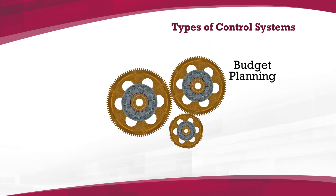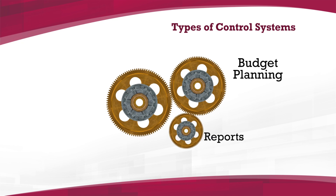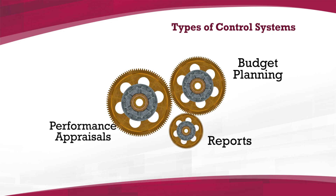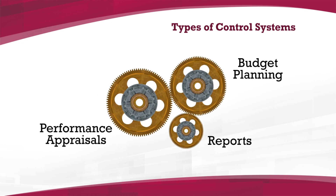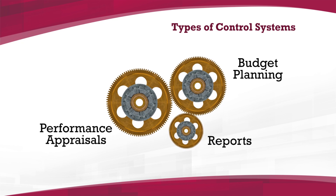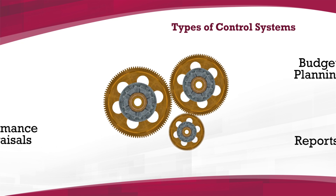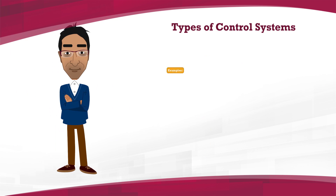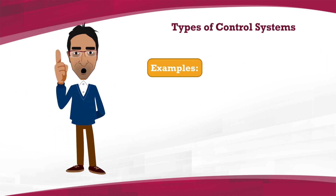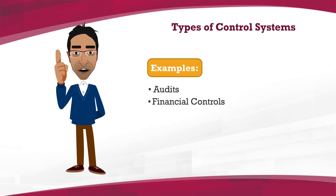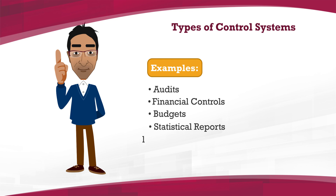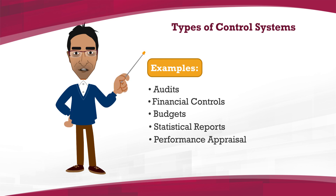Budget planning, reports, and performance appraisal are used to regulate behaviour. Examples of bureaucratic control are audits, financial controls, budgets, statistical reports, and performance appraisal to regulate behaviour and results.